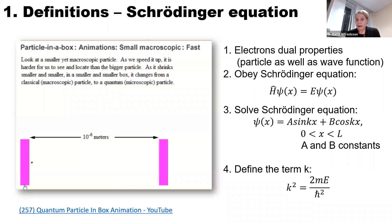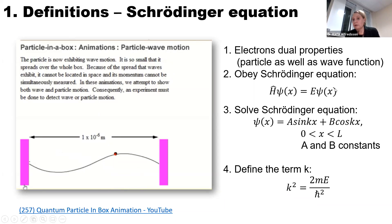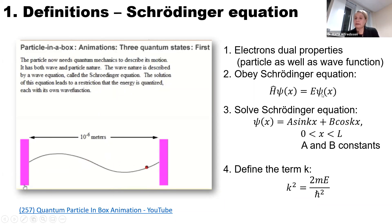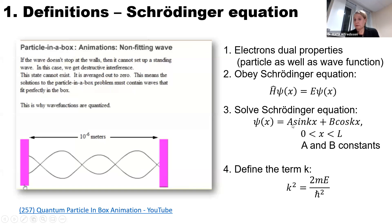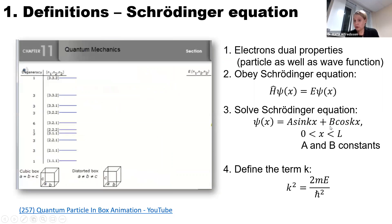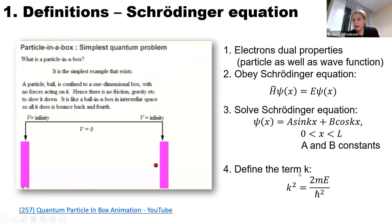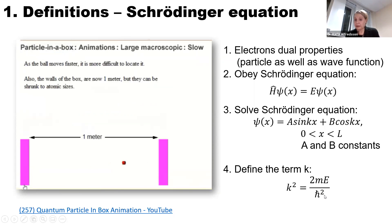It was also found that electrons obey an equation described by Schrödinger, so it is called Schrödinger's equation. It depends on energy and on a function called psi, which in the one-dimensional box depends on x. That psi is our wave function. Schrödinger showed that the psi function can be described by a sine function and a cosine function, where A and B are constants. The term K has a specific value depending on the mass of the particle, the energy, and Planck's constant.